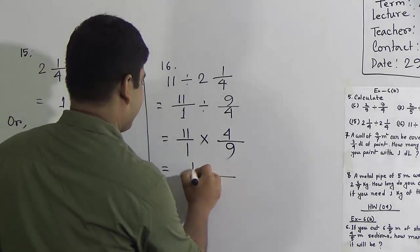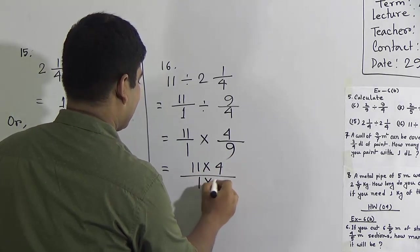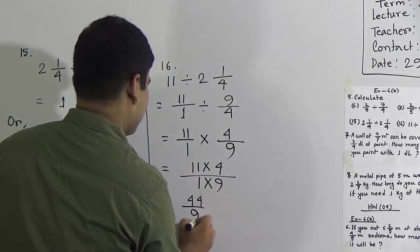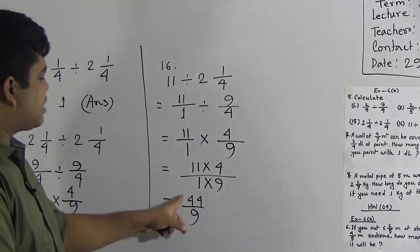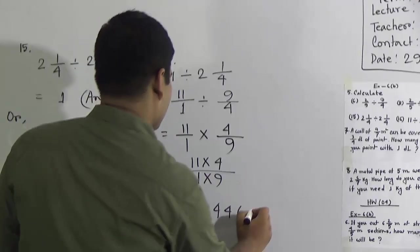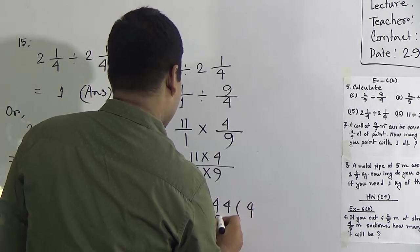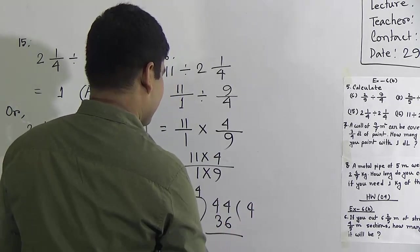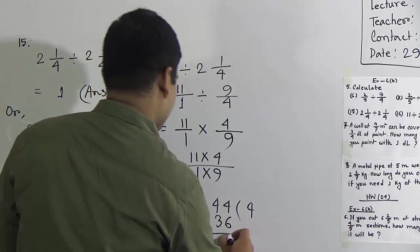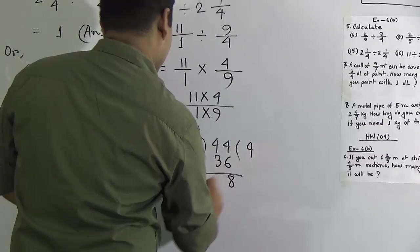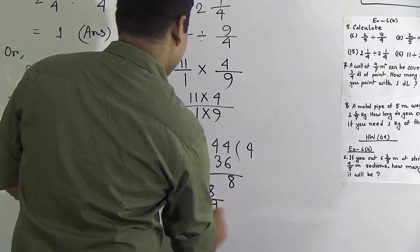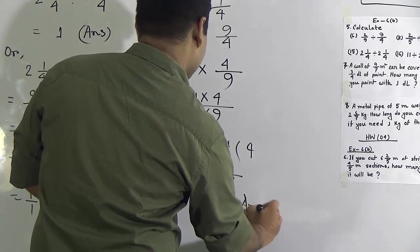So we multiply: 11 × 4 = 44 and 1 × 9 = 9, giving 44/9. Now we divide 44 by 9: 9 goes into 44 four times (9 × 4 = 36). Subtracting: 44 − 36 = 8. So the answer is 4 and 8/9. The whole number is 4, the numerator is 8, and the denominator is 9.